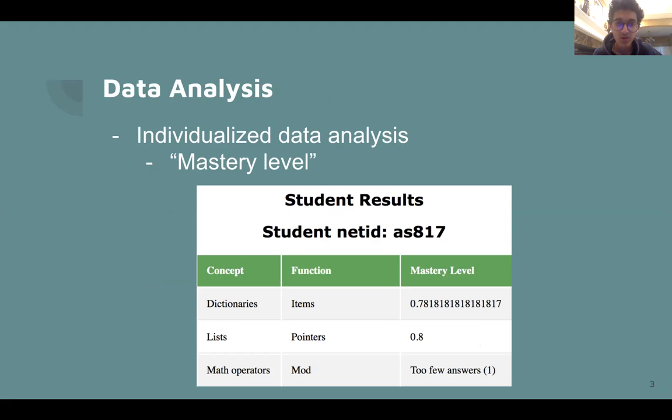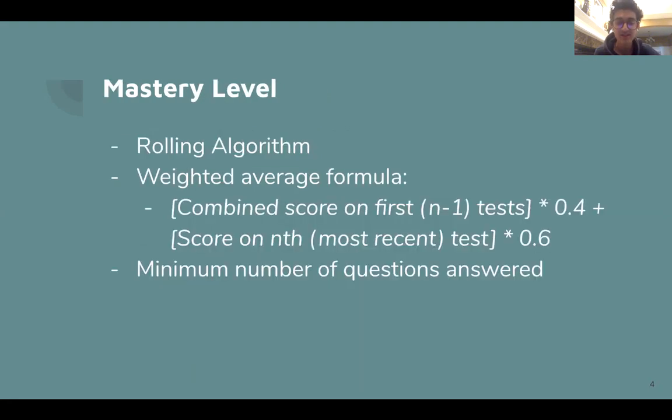Now exactly what this mastery level is is a rolling algorithm that is updated every time a student submits a quiz for a certain concept. You can see based on this formula that we attribute 40% of the weight for the mastery level to the total score on the first n-1 quizzes that a student takes and then 60% weight to the most recent or nth quiz that a student has just submitted.